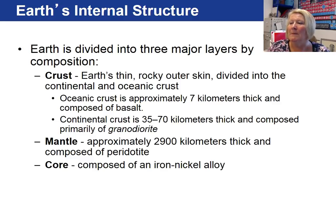The mantle exists below the crust, approximately 2,900 kilometers in thickness, and is made up of a rock called peridotite, that we'll talk more about in our igneous rock chapter. And the core is where iron and nickel sits.